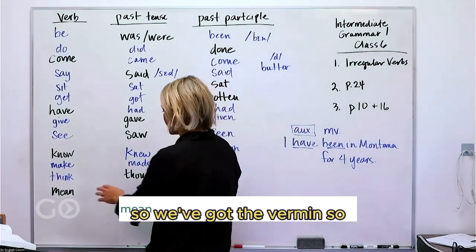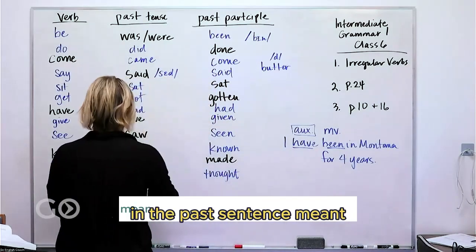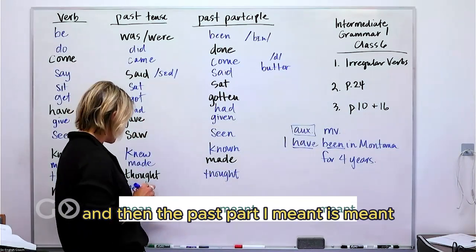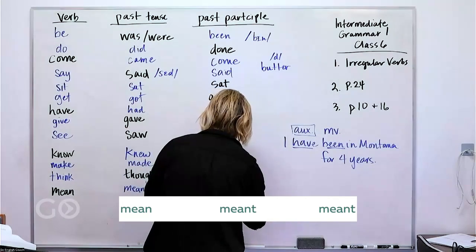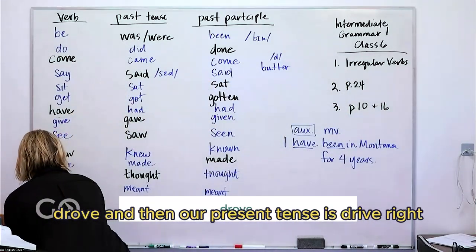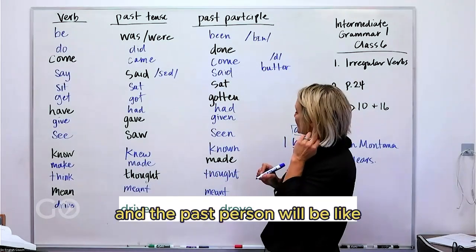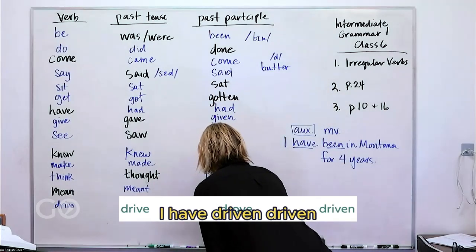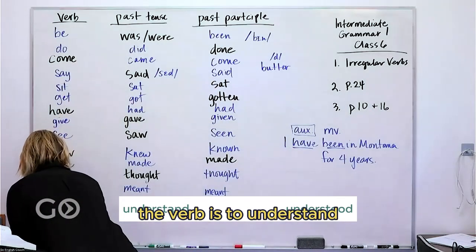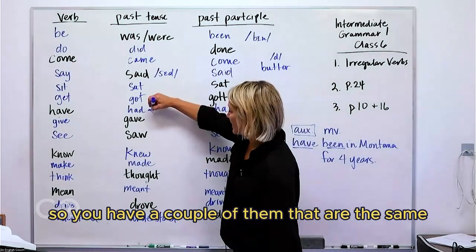We've got the verb 'mean' — 'I mean to have a good day.' In the past tense, 'meant': 'I meant to do that.' And the past participle is also 'meant.' Then we've got 'drove' as the past tense — the present form is 'drive.' I drive a silver car. I drove a station wagon to work yesterday. And the past participle is 'driven': 'I have driven this car for 10 years.' Last one: 'understood.' The verb is 'to understand,' and the past tense is 'understood' — these two forms are the same.